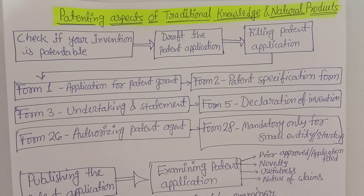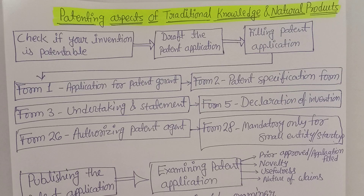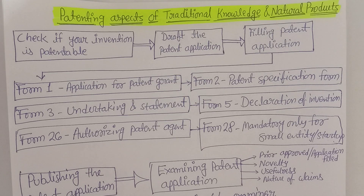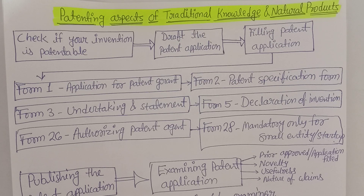Now we are going to discuss the patenting aspects of traditional knowledge and natural products. When any kinds of natural products or knowledge from traditional systems of medicine are to be patented, and if the information or natural product has medicinal value and is not known to mankind — if there is novelty in that information — they can go for a patent.